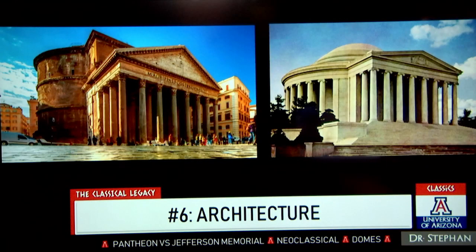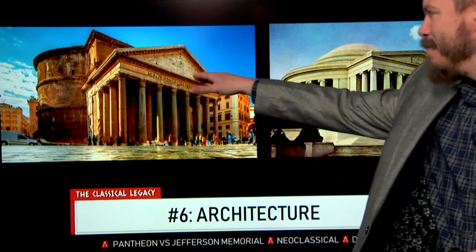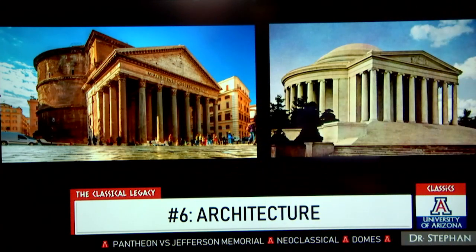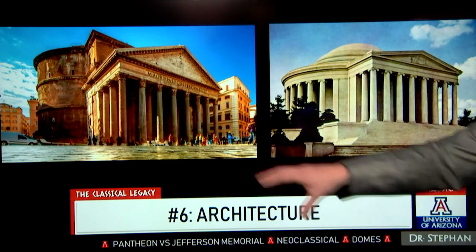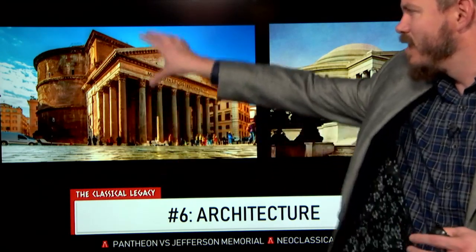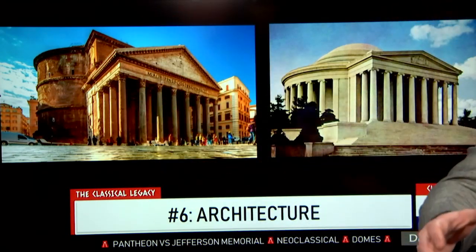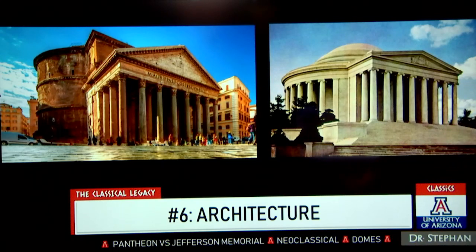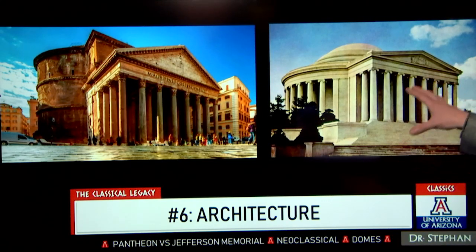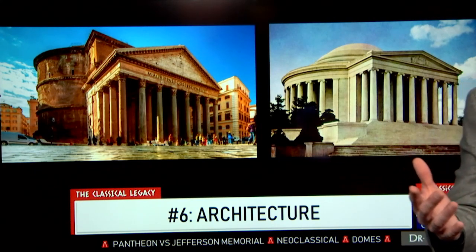Architecture — what we're looking at here is the Pantheon in Rome on the left-hand side, dating back originally to Marcus Agrippa — that's whose name is up there — but rebuilt by Hadrian in the second century AD. It's this super weird kind of temple where it's rectilinear on the front and cylindrical on the back, and for 1,500 years it had the largest dome in the world. And what we're looking at on the right is — take a guess — that's right, it's the Jefferson Memorial.